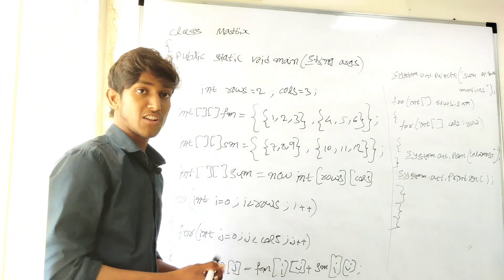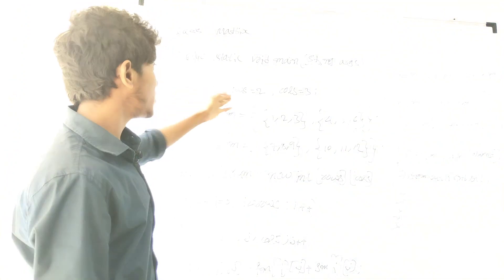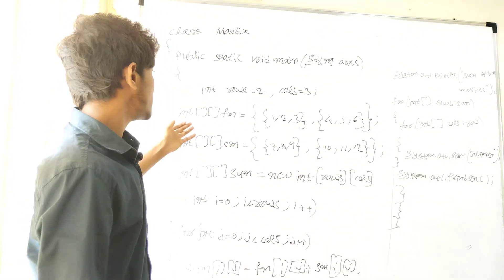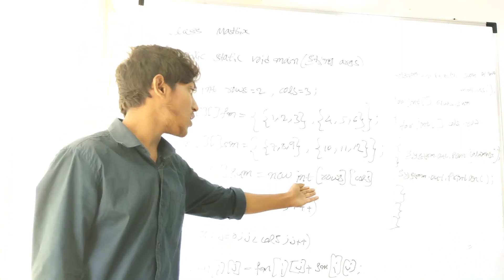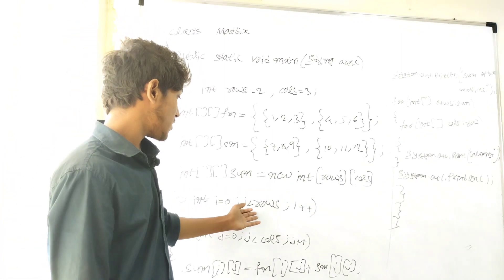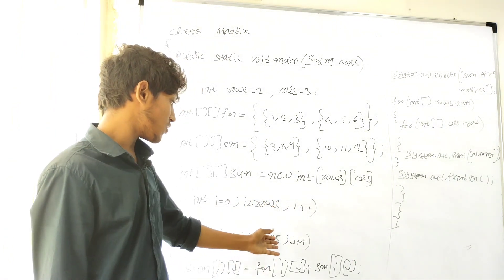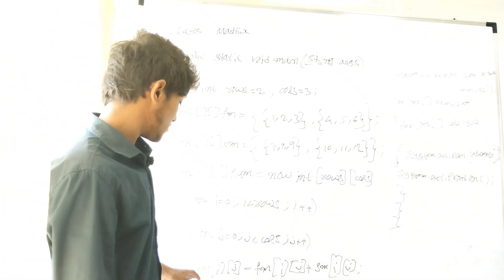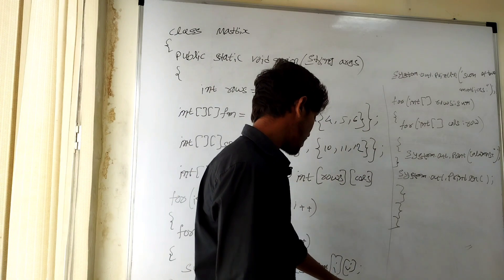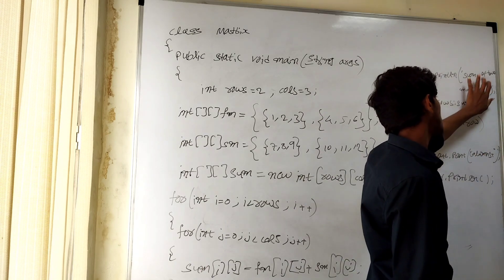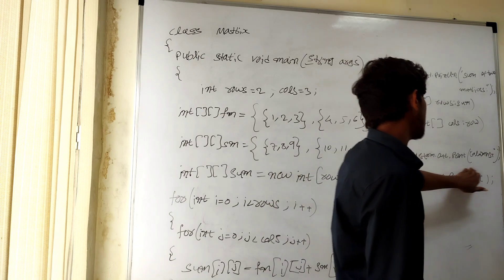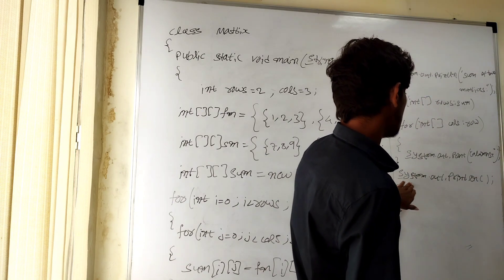This is the program to find the addition of two matrices. First, we write the class name. Then the main method: public static void main(String[] args). We take two integer values: rows and columns, and initialize two matrices — first matrix and second matrix. We create the sum array as a new object. Then the condition for int i = 0, i < rows, i++, and another condition for int j = 0, j < columns, j++. The logic is: sum[i][j] = firstMatrix[i][j] + secondMatrix[i][j]. After that, we print the output and write two conditions to print each element.